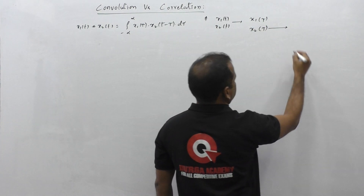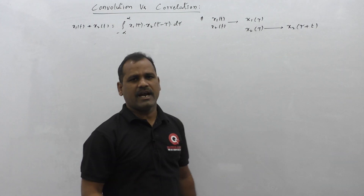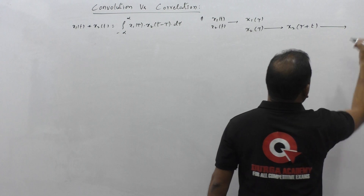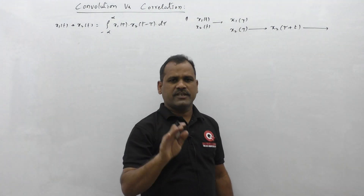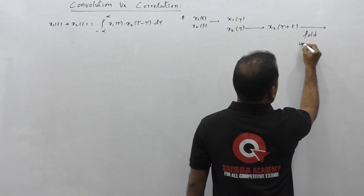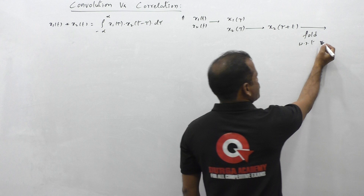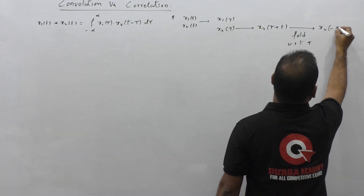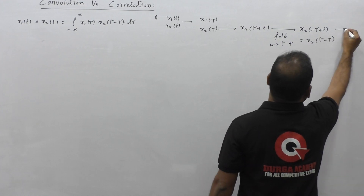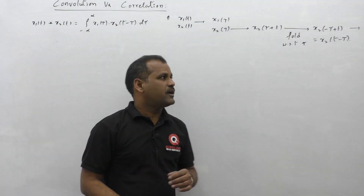In the second step, we shift the second function by some t — taking tau + t. So here we have shifting of the second signal. Then this second function, after shifting, undergoes reflection or folding with respect to tau. We are folding with respect to tau, the new time index, not with respect to t. So we get x2(-tau + t), which equals x2(t - tau).